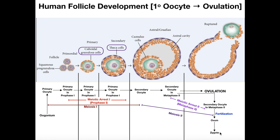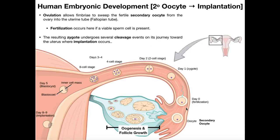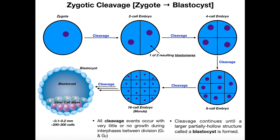From the zygote, we'll pick up in the next video and talk about how the zygote develops into a structure called a blastocyst. This involves a type of cell division very different from what you've probably studied before. Most cell divisions are either mitosis for somatic cells or meiosis for germ cells. This is a third type called cleavage, and it's different because the cells get progressively smaller — we'll explain why in the next video.